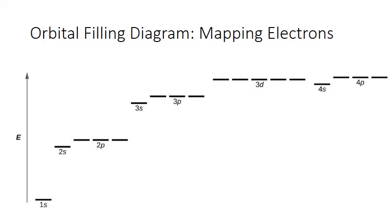We use orbital filling diagrams to map electrons in their ground state, or lowest potential energy state, in an atom. The principal energy levels and sublevels are represented by numbers and letters, while the dashes or lines indicate individual orbitals that can each hold two electrons.